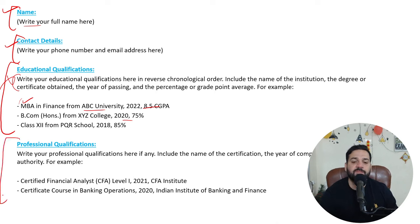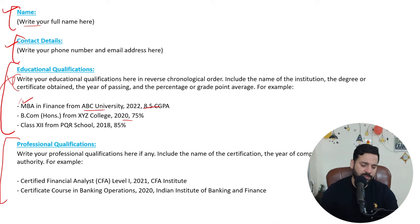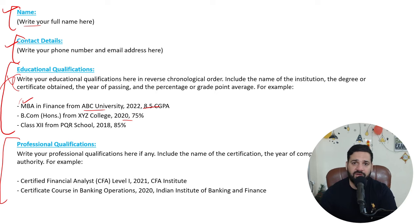Next, write your professional qualification if there is any — CFA, CMA, CA, IIBF, JAIIB, or any NISM qualification such as NISM 5A or NISM 8. You can write those down here. After that, write your work experience in reverse chronological order.